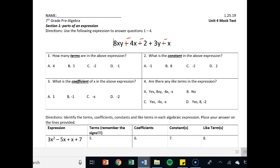It says how many terms are in the above expression? Terms are simply separated by plus or minus signs. So if I count the terms, I've got 1, 2, 3, 4, 5 terms. So your answer there is b.